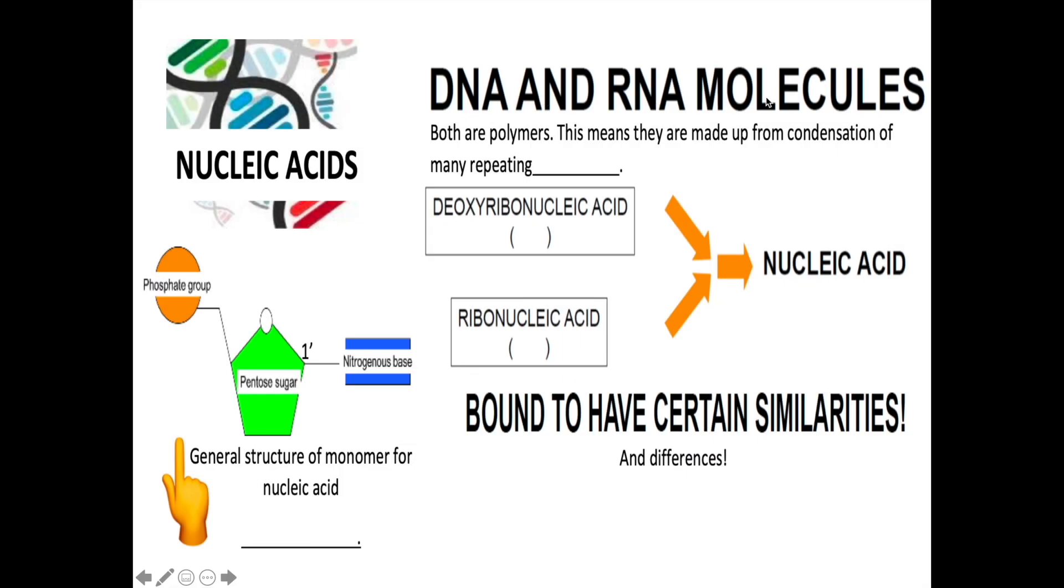DNA and RNA molecules are both polymers of nucleic acid. This means that they are made up from the condensation of many repeating monomers. DNA is short for deoxyribonucleic acid. And RNA is short for ribonucleic acid. Whatever it is, both are nucleic acid. So they are bound to have certain similarities and also differences.